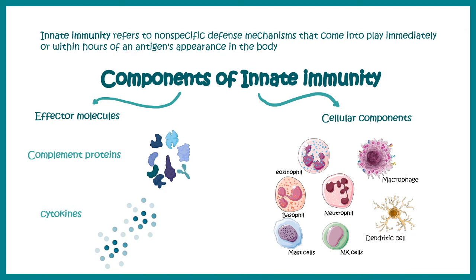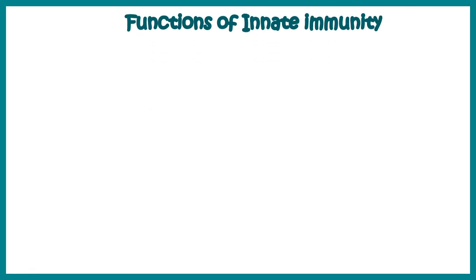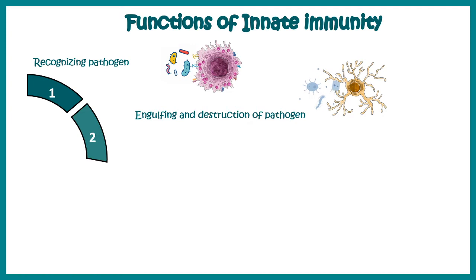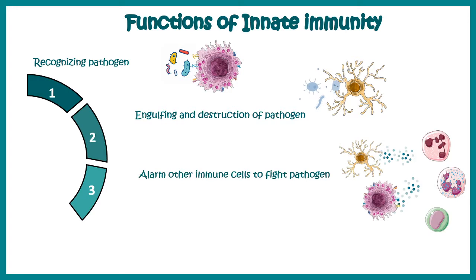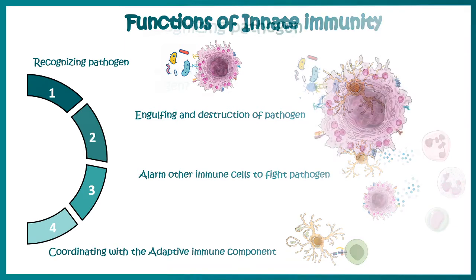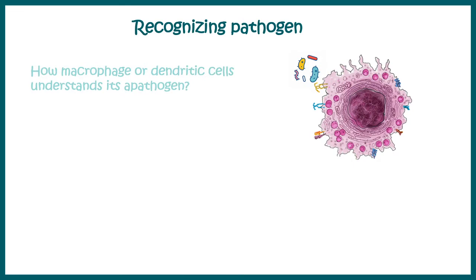Let's talk about the functions of the innate immune system. First, their job is to recognize pathogens. Secondly, they know how to engulf the pathogen and they would try to destroy the pathogen. Thirdly, they have to alarm other immune component cells such that they can also come and together lead to a stronger immune response. Lastly, their job is to coordinate with the adaptive immune system and let it know about the nature of the pathogen.